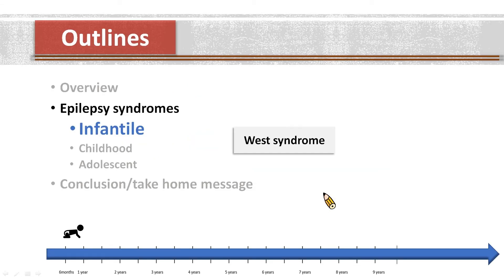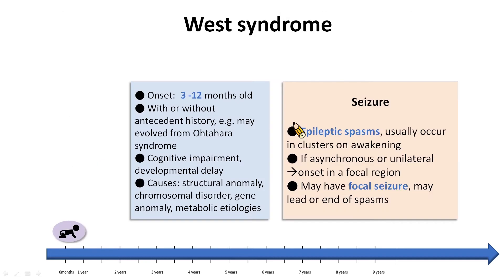First, I will start with epilepsy syndromes with infantile onset. In this age group, I will show you West syndrome. West syndrome is characterized by onset of epileptic spasms between 3 and 12 months of age, although earlier and later onset may occur.